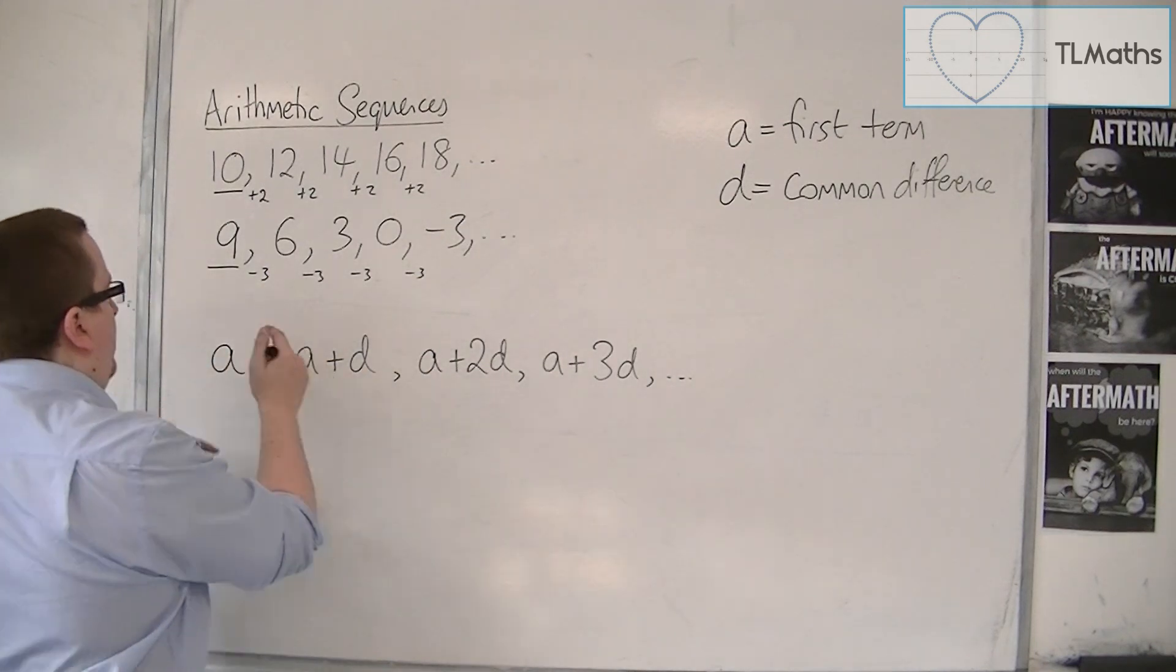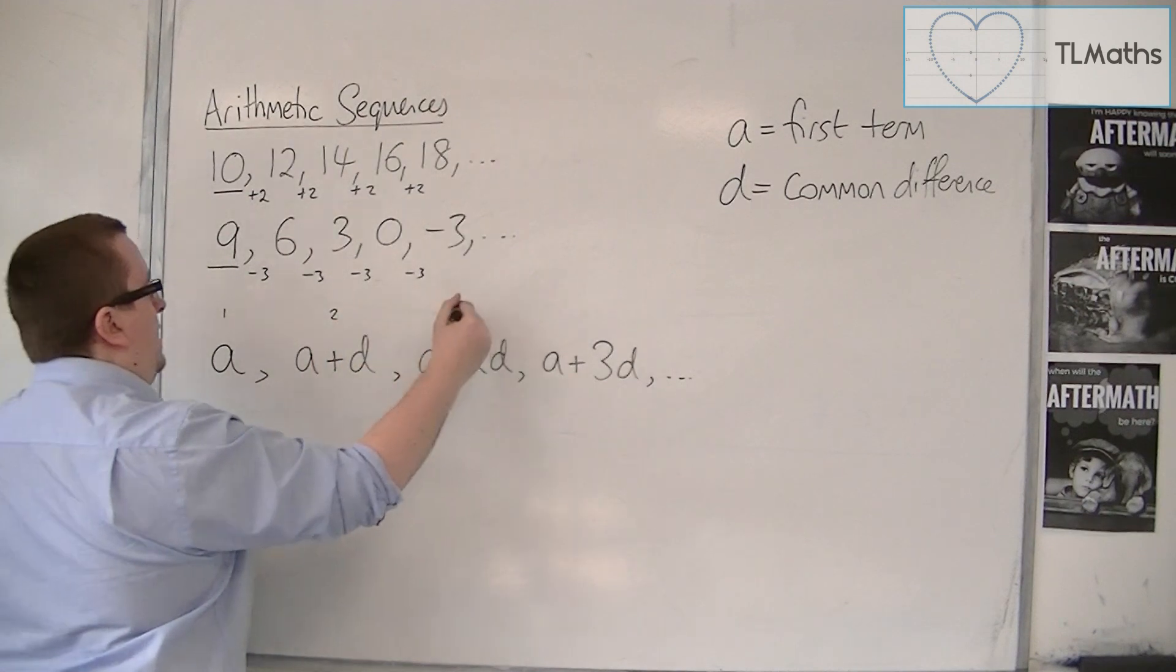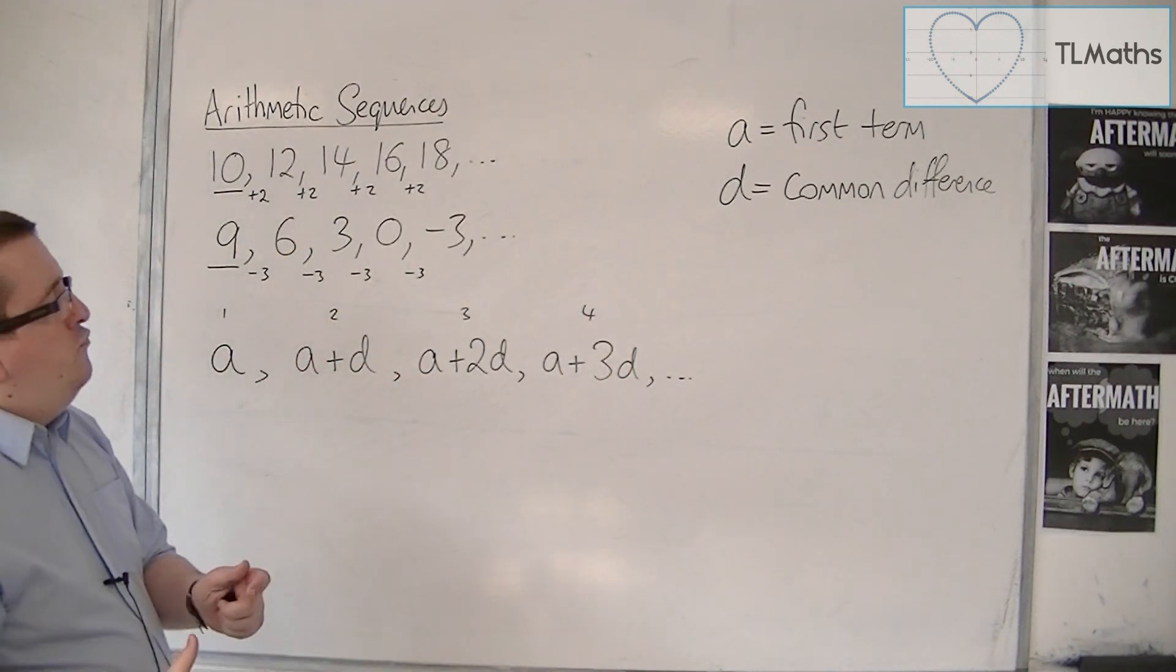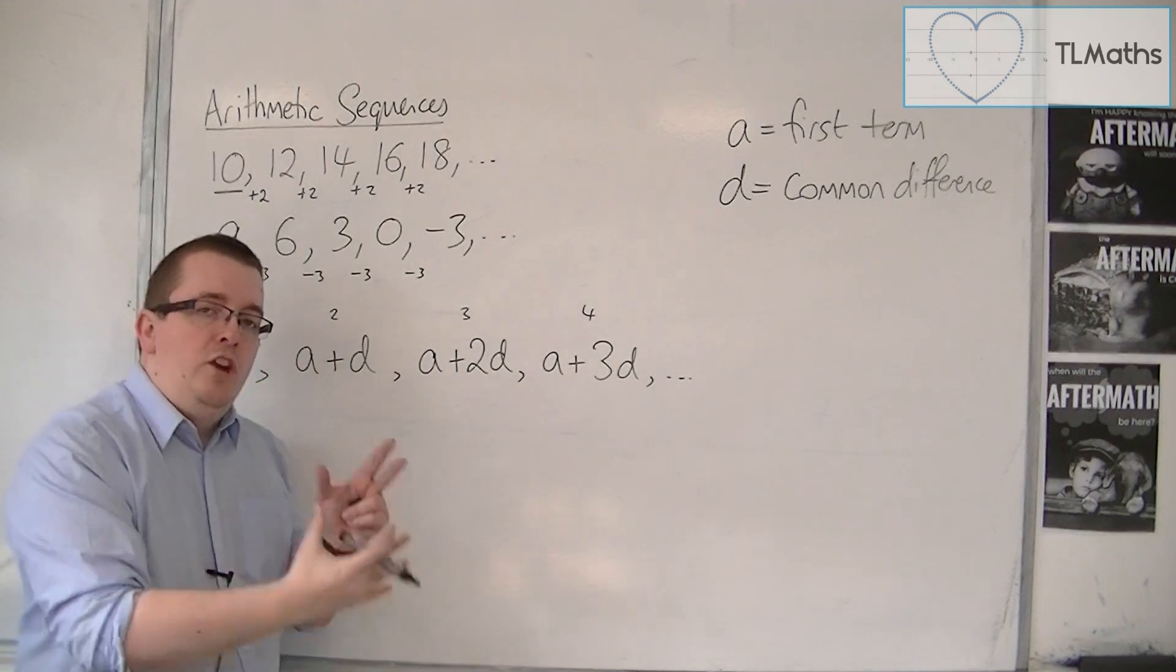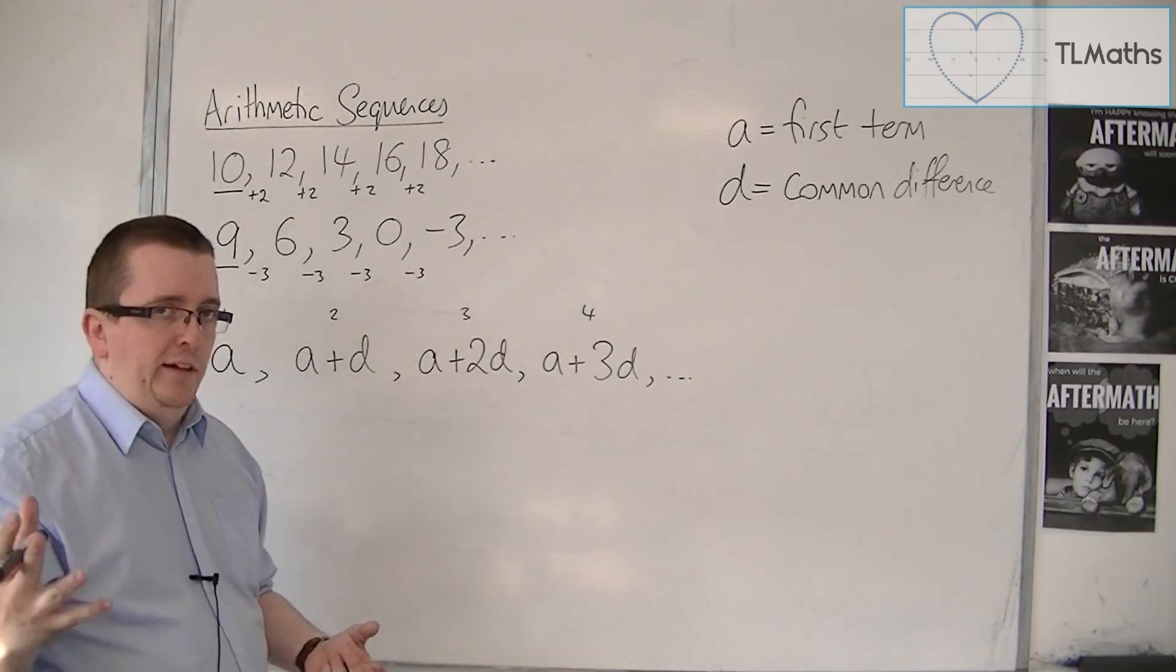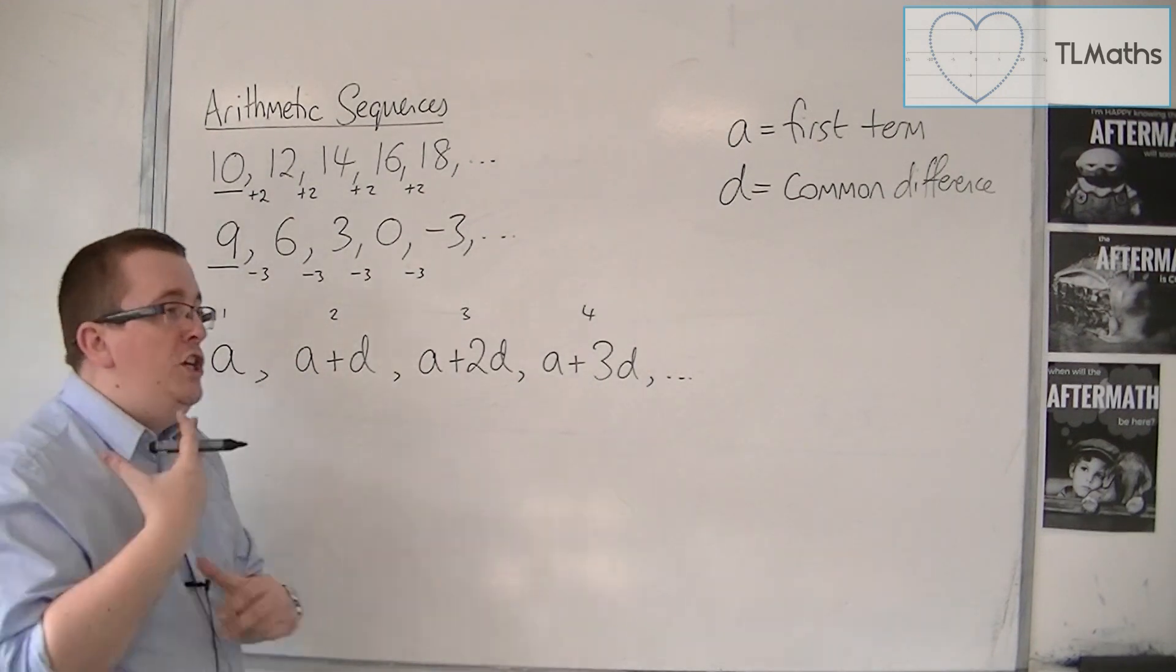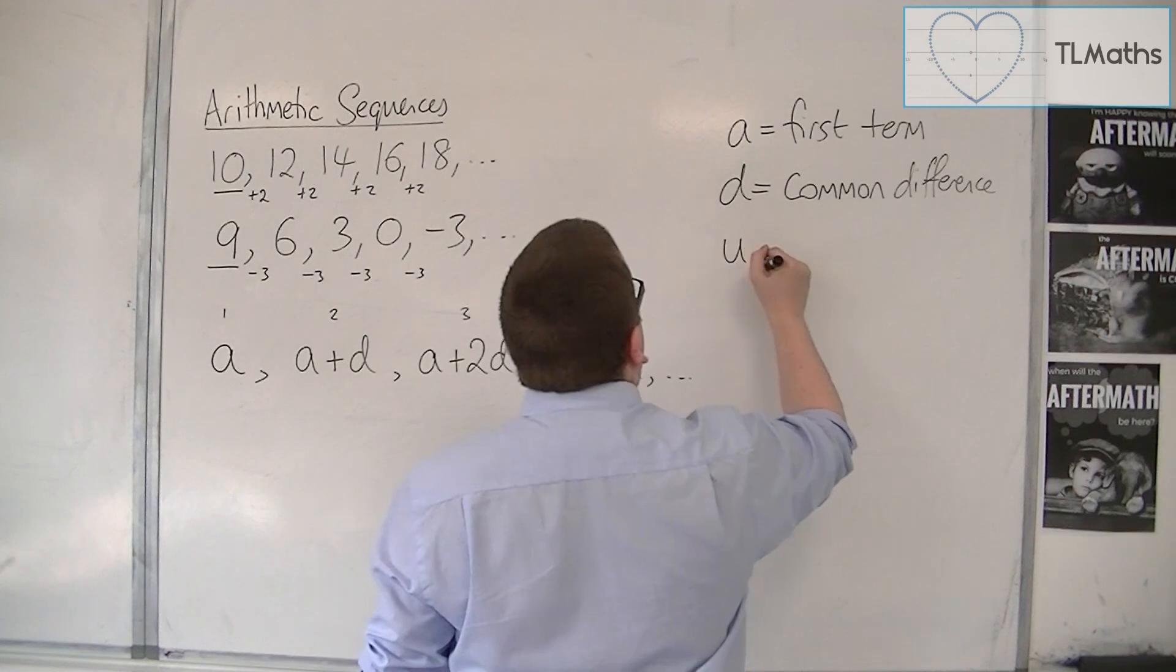Now, if this is my first term, that's my second term, that's my third term, that's my fourth term, I can write down a general term, the nth term, for this sequence. And we're going to call Un, the nth term.